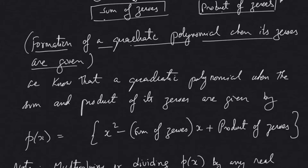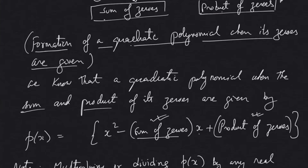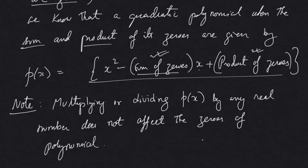Here is the formula, or theorem, that we use to form a quadratic polynomial when its zeros are given. Once the zeros are given, we can easily find the sum and product of its zeros. We know that a quadratic polynomial, when the sum and product of its zeros are given, is: p(x) = x² − (sum of zeros)·x + (product of zeros). It's not very difficult — all you have to do is find the sum and product of the zeros and bring it into this format, then you will have your quadratic polynomial.